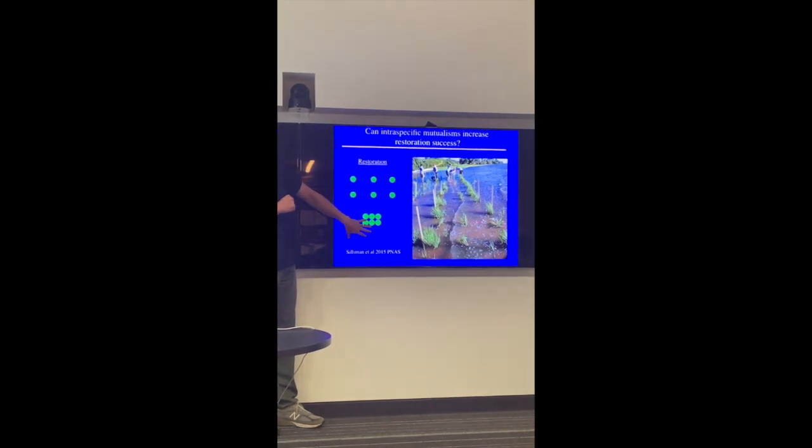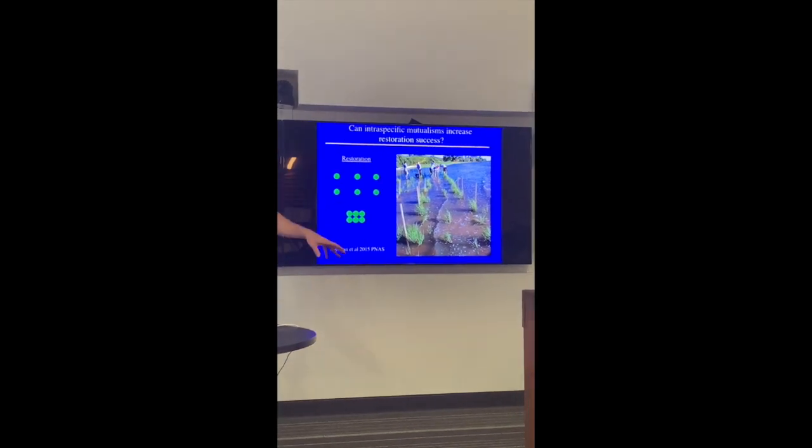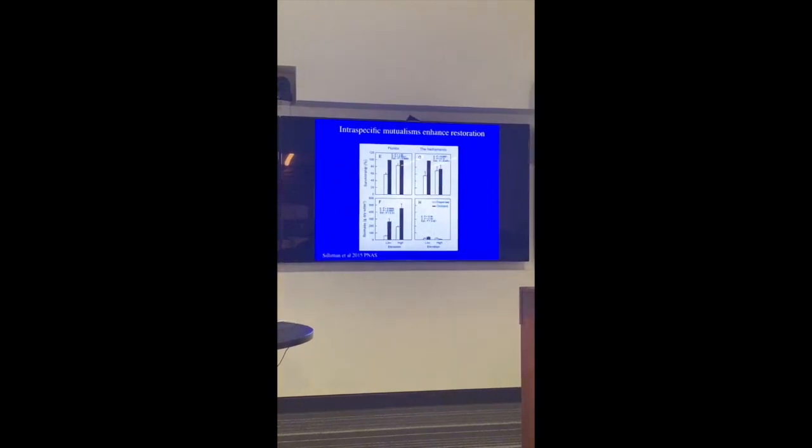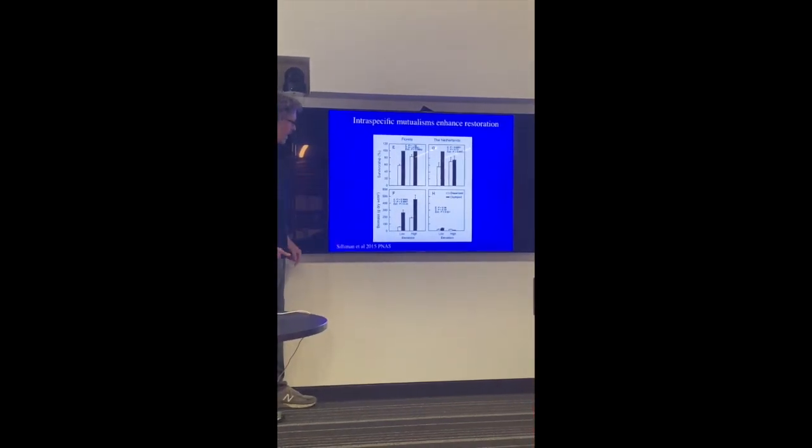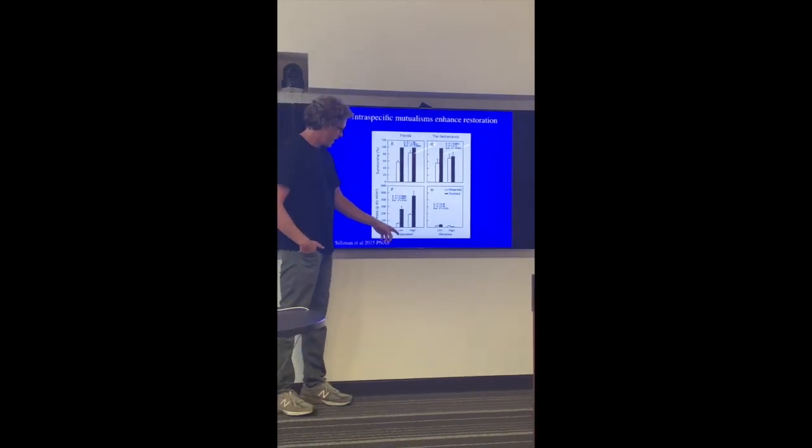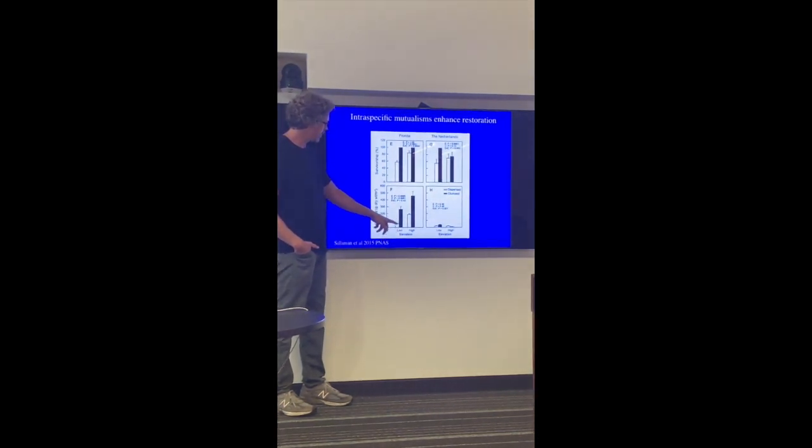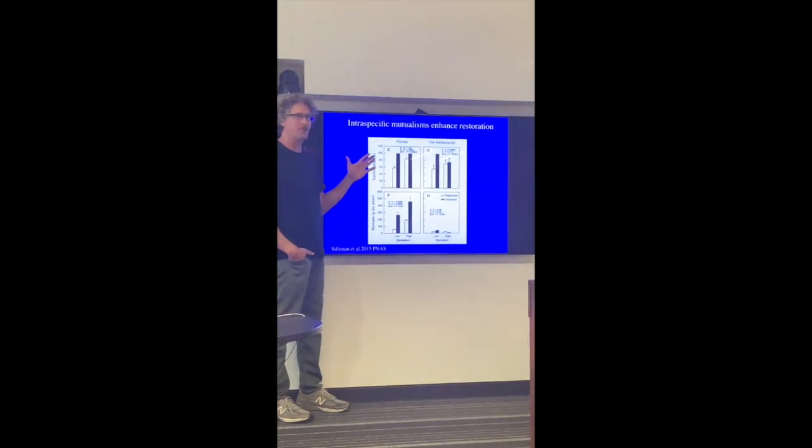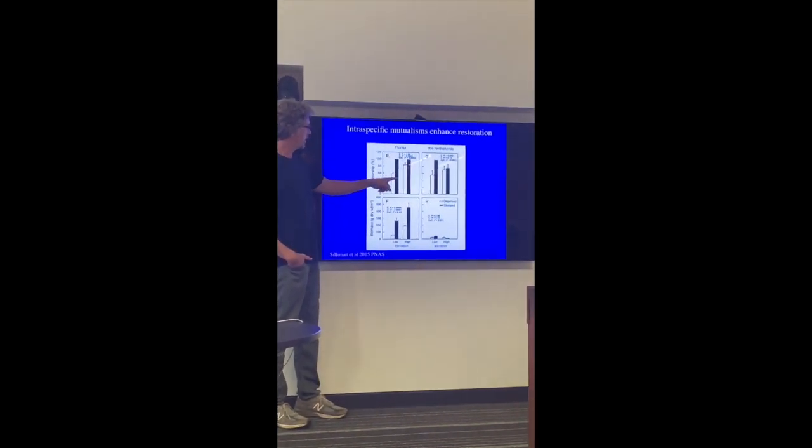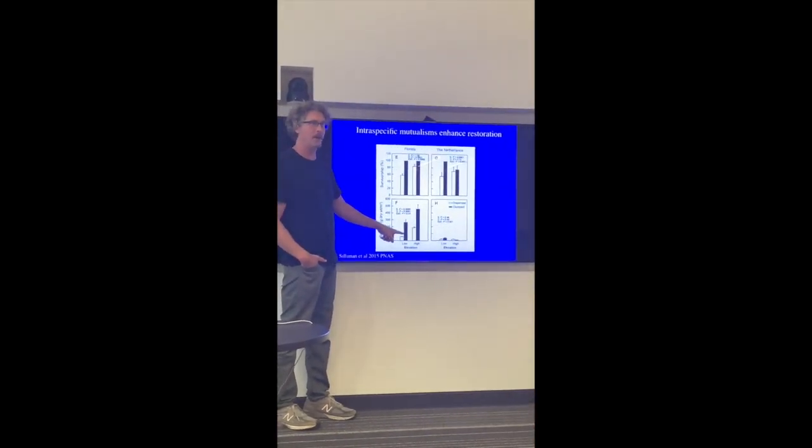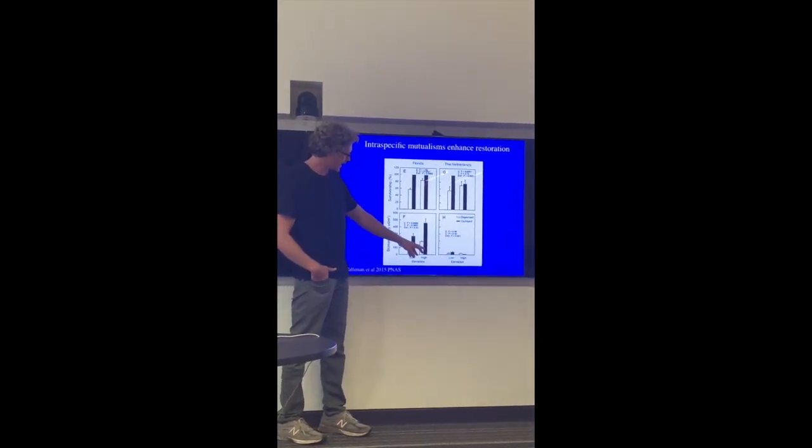If you control for density and just look at configuration effects, we did that. We did that in the Netherlands. We did that in salt marshes in the United States on the east and west coast. Here's the data slide. This is from Florida. This is from the Netherlands. Survivorship and biomass. We did a stress gradient. We did elevation low and high. Low elevation is more stressful because there's more flooding for these terrestrially evolved plants. Remember they all start off with the same biomass. The black bar is clumped. After a two year period in the low zone, we see almost 100% increase in survivorship and 300% increase in plant biomass. Just put them together so they touch.